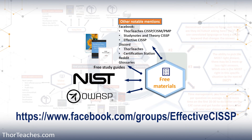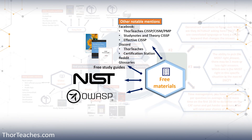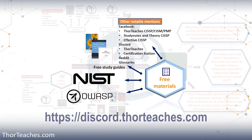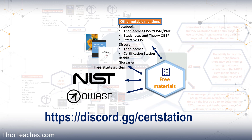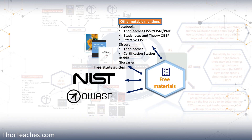Then we have Effective CISSP by Wenz Voo — a smaller group, but still a tremendous amount of great knowledge and a great community. While Facebook is great for many things, it's not really good for natural organic discussion. Which brings us to Discord servers — there are really only two I know of that are good: my own at discord.thorteaches.com, and Certification Station at discord.gg/certstation. Both are great communities, but I have to be honest — Certification Station is amazing. There are so many active, super helpful people there, and I think it's tremendously valuable in your studying.